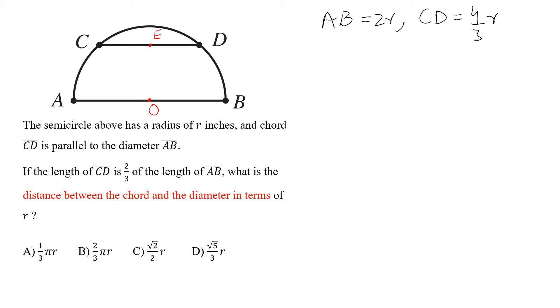And if we draw a line from E to O, this will be perpendicular. OE will be perpendicular on CD because CD is parallel to diameter AB.